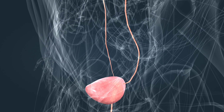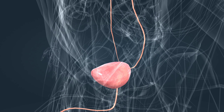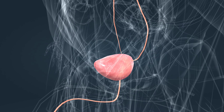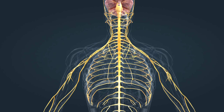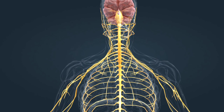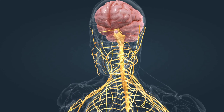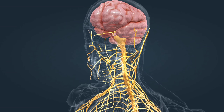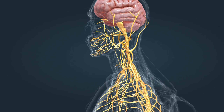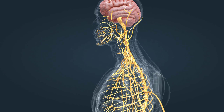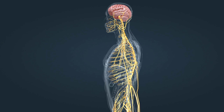The nervous system, together with the hormonal system, is responsible for the coordinated, regulated functioning of the body. The central nervous system consists of the brain and the spinal cord, while the peripheral nervous system consists of nerves, which transmit information between the central nervous system and the organs as electric signals. There are 12 pairs of cranial nerves, which emerge directly from the brain, and 31 pairs of spinal nerves, which emerge from segments of the spinal cord.